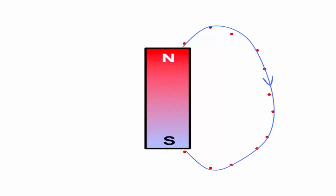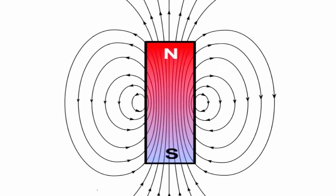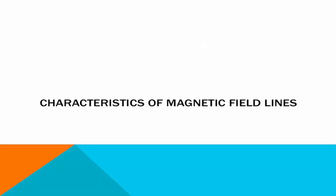Now we can draw a number of magnetic field lines around the bar magnet. By doing so, we get a result which looks like a complete field line diagram. So let us now explore the characteristics of these magnetic field lines.